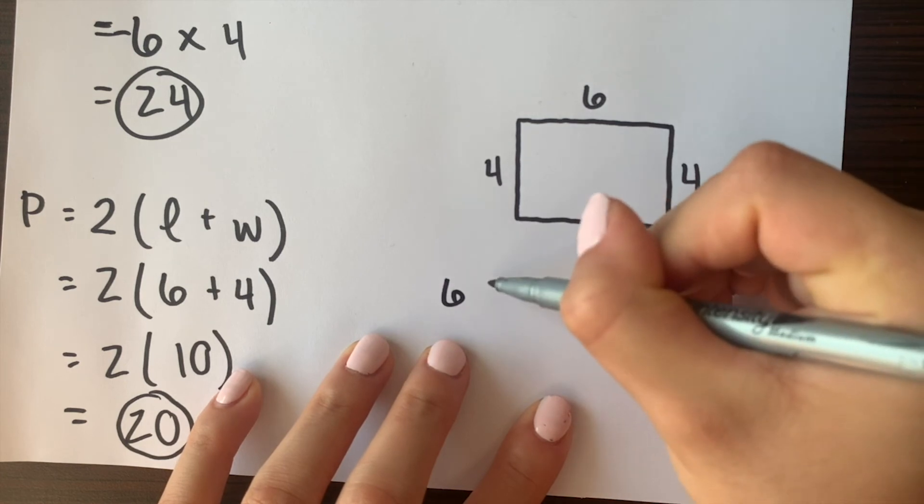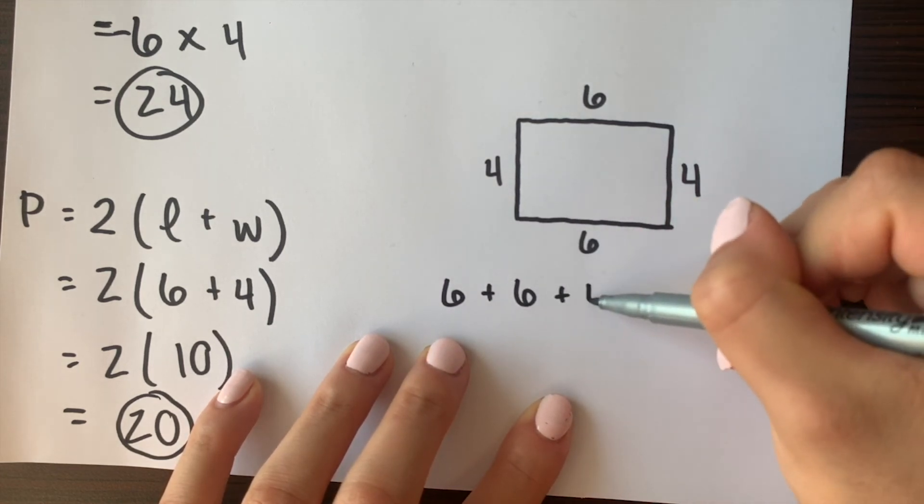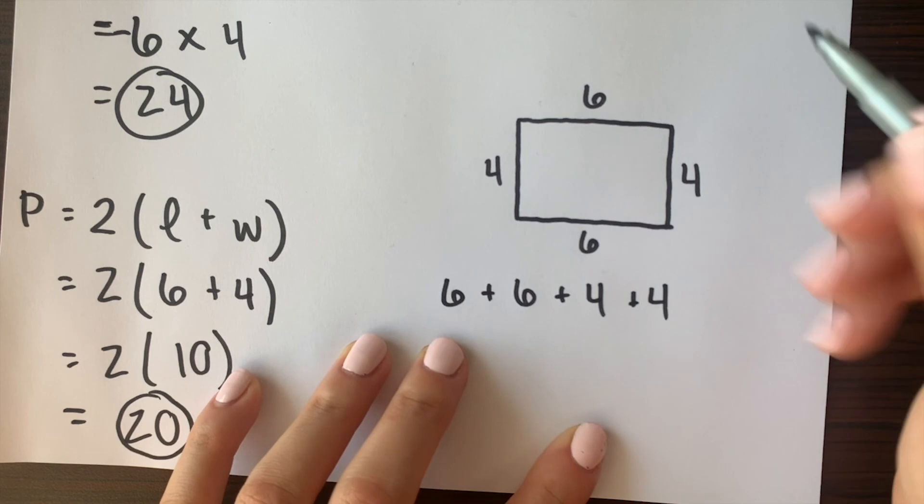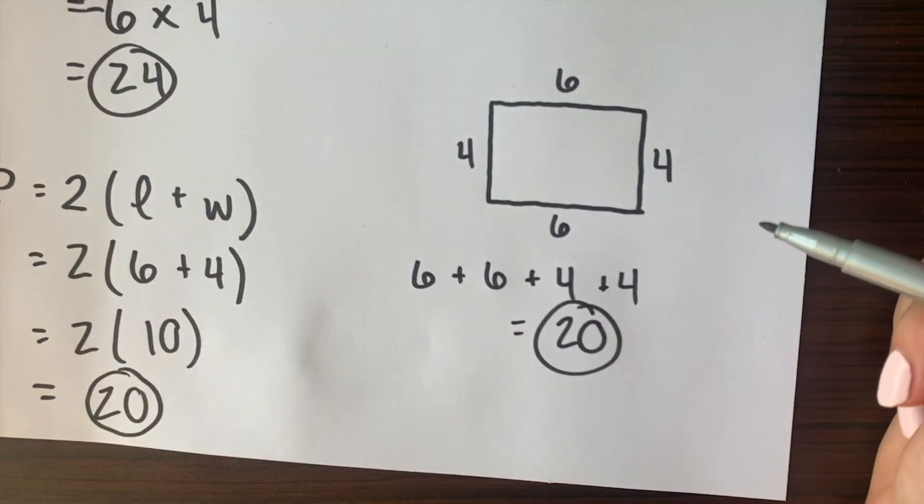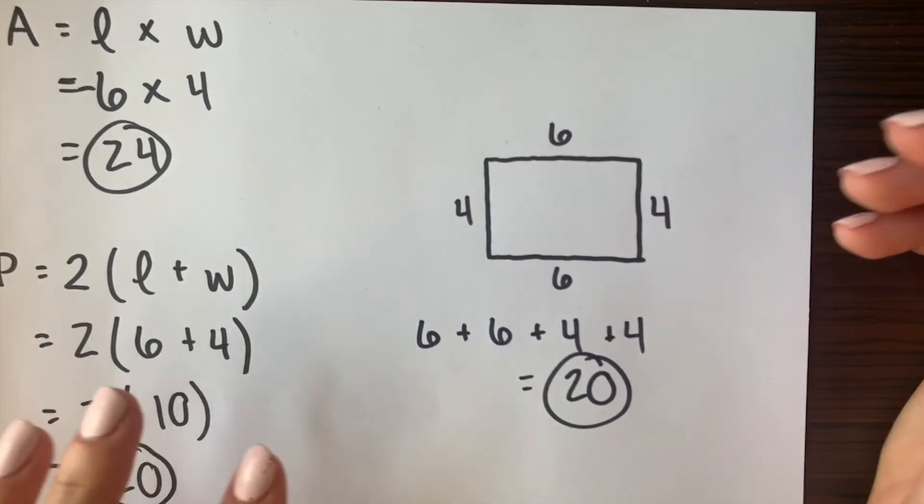So this is basically what we're doing. 6 plus 6 plus 4 plus 4 gives us 20. So that is another way to find our perimeter is just adding all of the sides together.